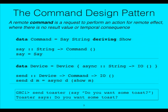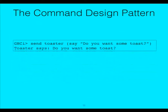Let's build this up in Haskell. Let's build the ability to do a say. We have a data structure which has a constructor say and a string. We have a fake device here — that fake device has an asynchronous ability to send a string across to some remote location. Our send is simply: asynchronously, please send to my remote toaster the show string of the say command. So we're sending stuff across — we want to send to the toaster 'do you want some toast?'